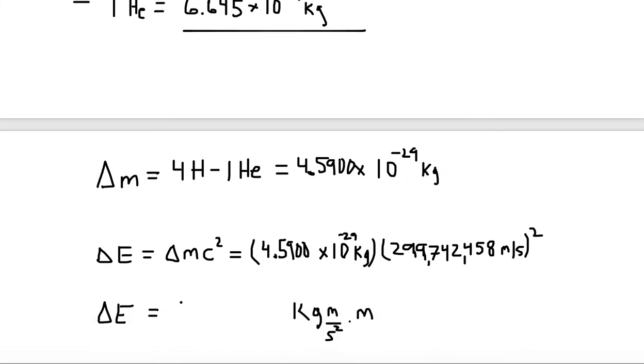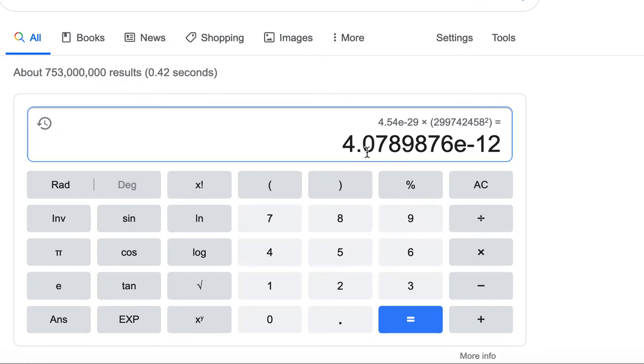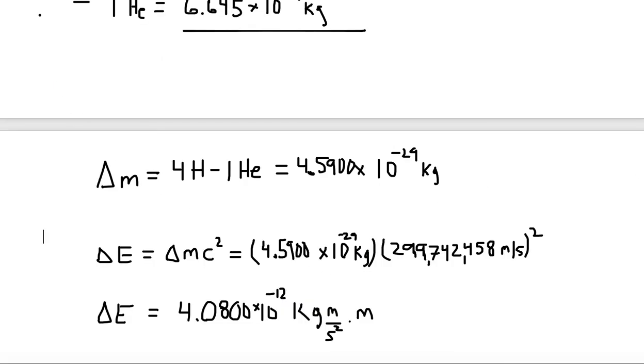So we're going to end up with 4.08. Now I'll add the two zeros afterwards, times 10 to the minus 12. The nine kicks this one up to a nine. So it's 4.0790 times 10 to the minus 12.